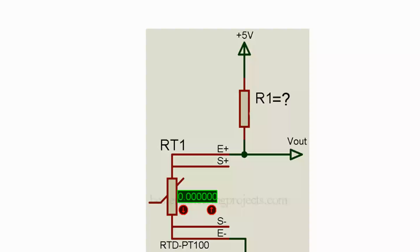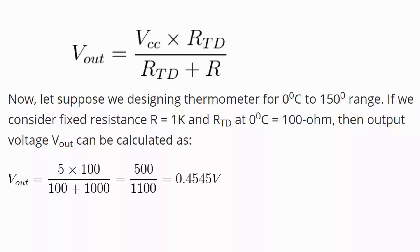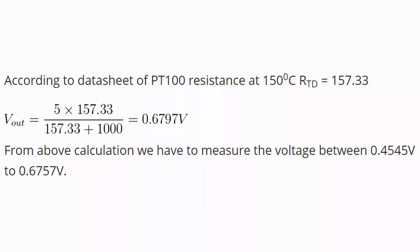The value of fixed resistor depends upon the temperature range we are going to measure. Let us suppose we are designing for 0 degree Celsius to 150 degree Celsius. If we consider fixed resistor R is equal to 1 kilo ohm and resistance of PT100 at 0 degree Celsius is equal to 100 ohm, then output voltage Vout can be calculated using voltage divider formula. That is 0.4545 voltage. Similarly, we can also calculate Vout at 150 degree Celsius. According to the datasheet of PT100, at 150 degree Celsius resistance is 157.33 ohm. As a result, Vout equals 0.6797 voltage.